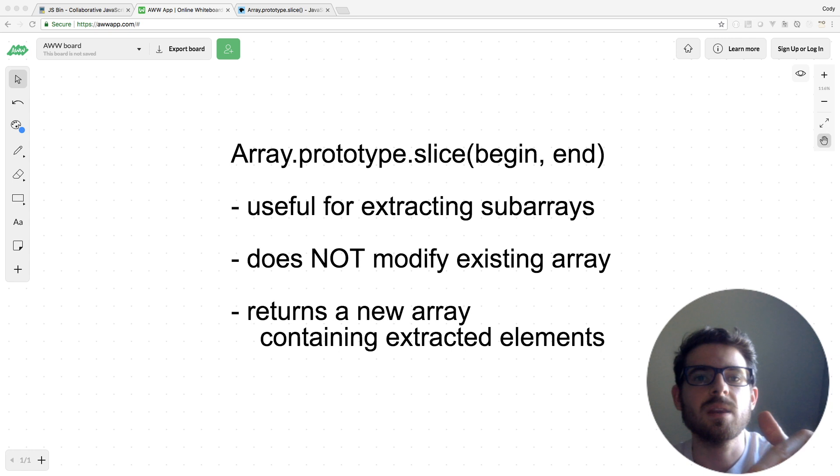The slice method is a helper function which takes an existing array and creates a shallow copy from a subarray that's inside of that array and returns it. It takes two optional arguments. The first argument is a begin argument, which represents the begin index, and then the second argument is an end variable, which represents the ending index to where you can take out that subarray.